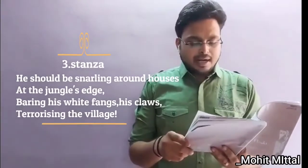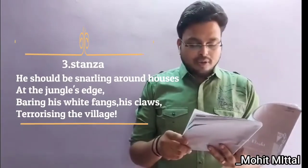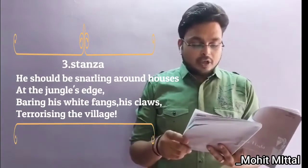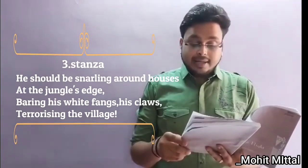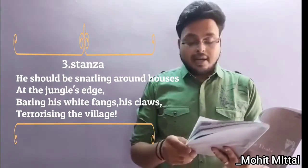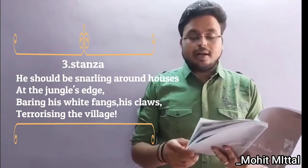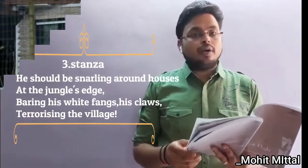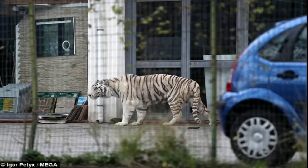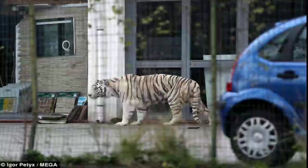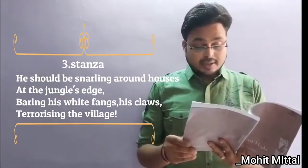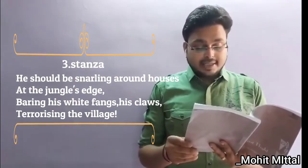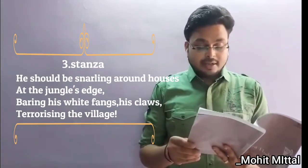'He should be snarling around the houses.' Snarling means showing teeth. 'At the jungle edge' means the tiger should be running around near the houses at the edge of the jungle, bearing his white fangs and his claws, terrorizing the village.